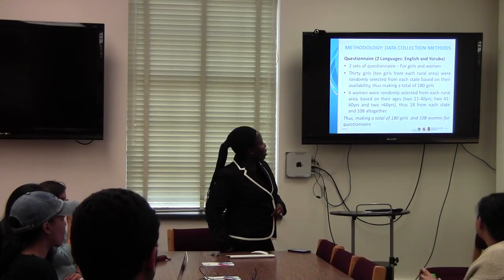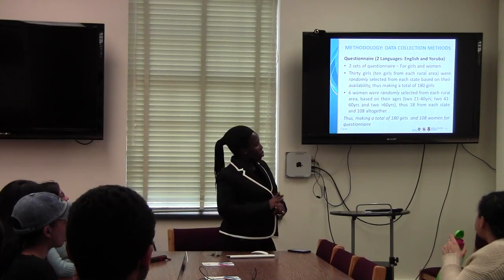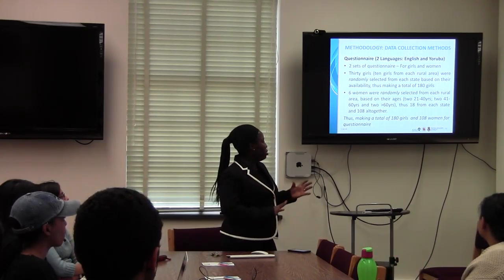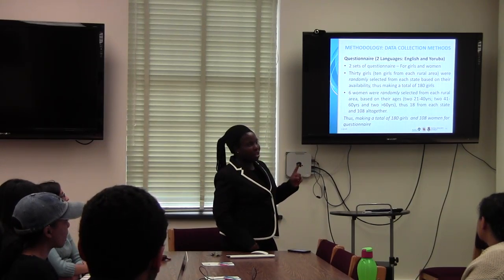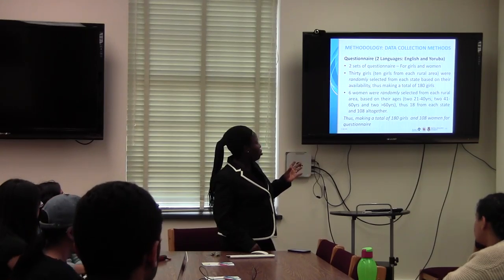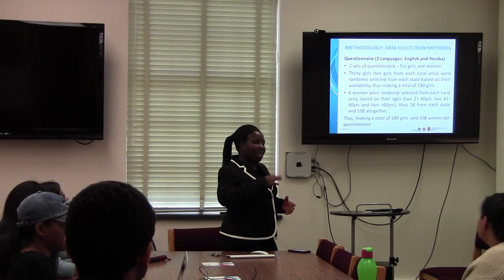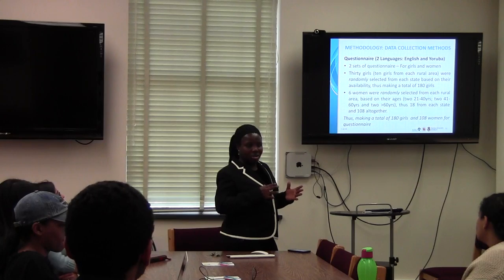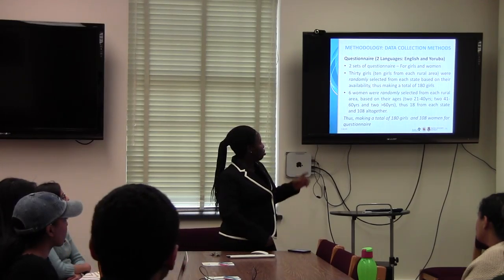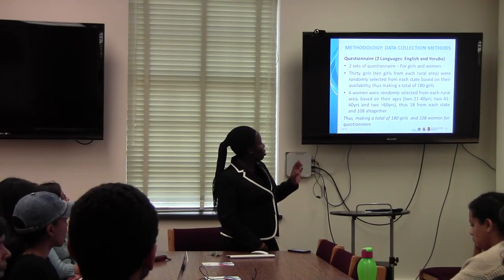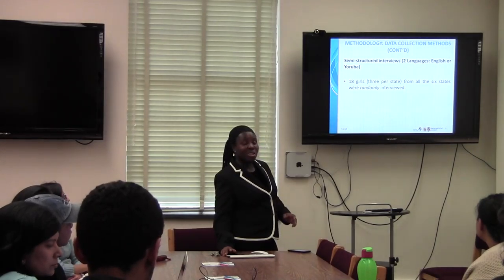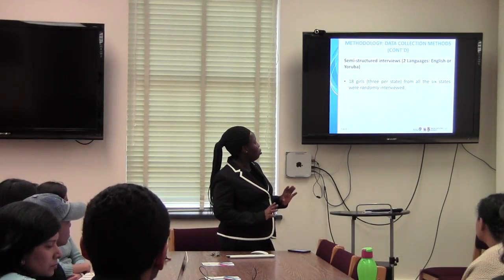30 girls — 10 from each rural area — were randomly selected, giving a total of 180 girls for the questionnaire. Six women per rural area were also randomly selected, with ages stratified: two between 21–40 years, two between 41–60 years, and two above 60 years, so that we could understand how things had changed across generations. We had a total of 180 girls and 180 women for the questionnaire, plus semi-structured interviews conducted in English or the preferred language of the participant.